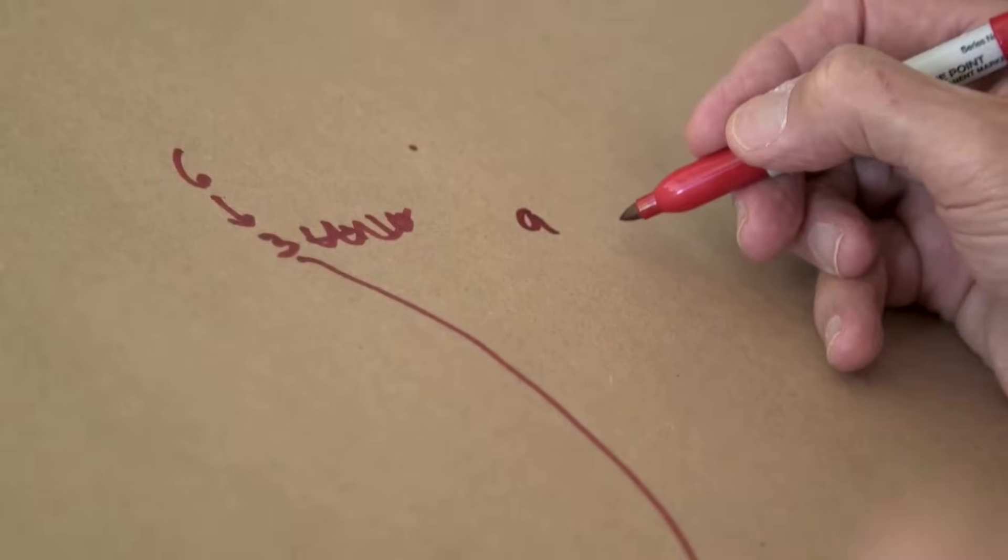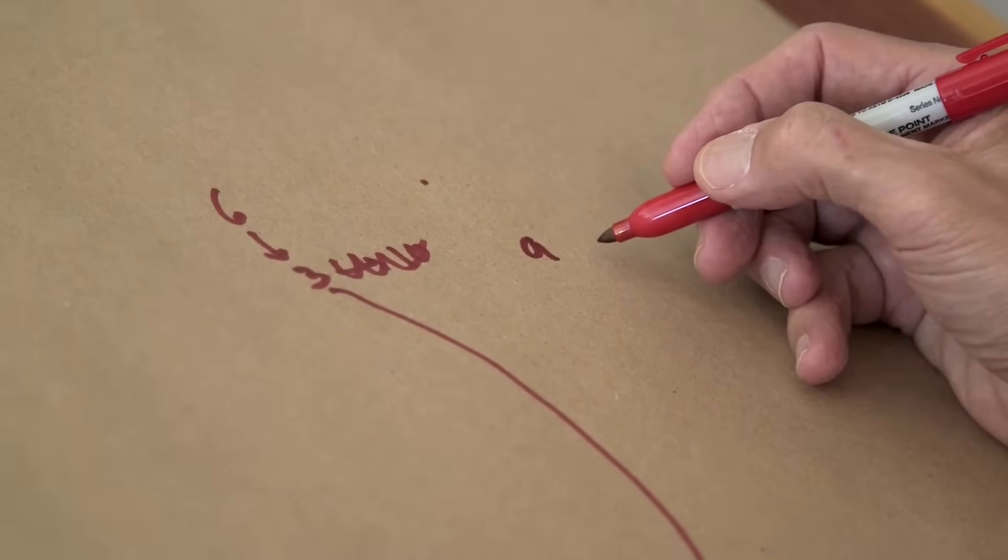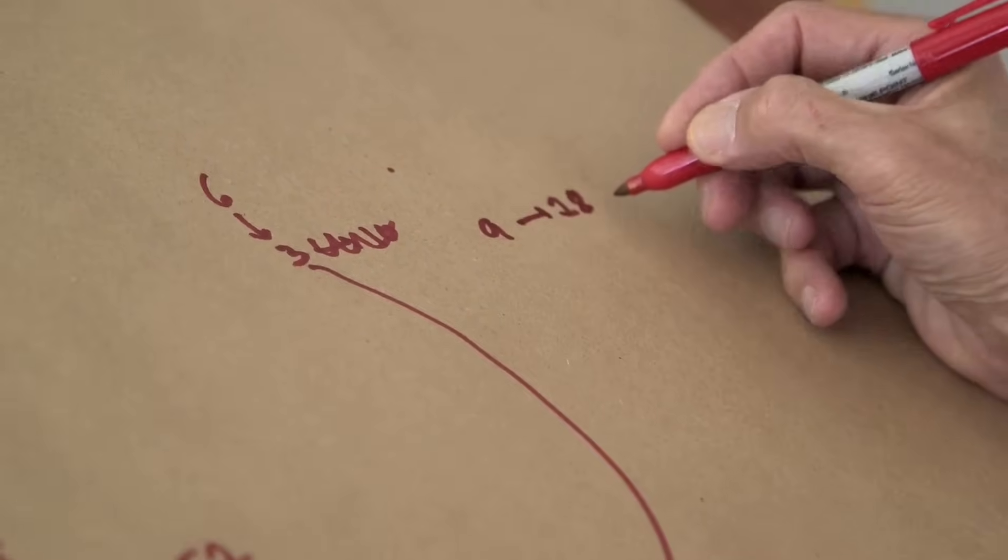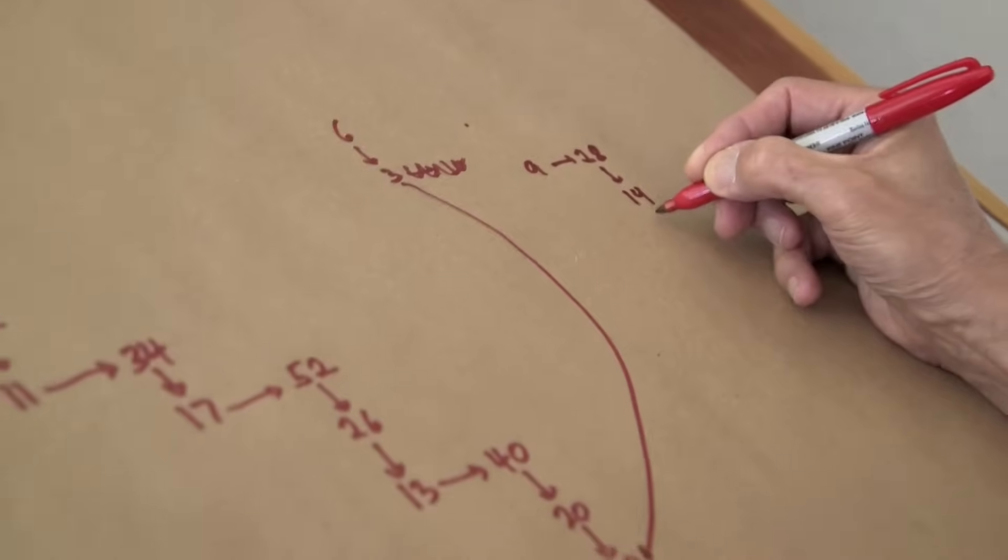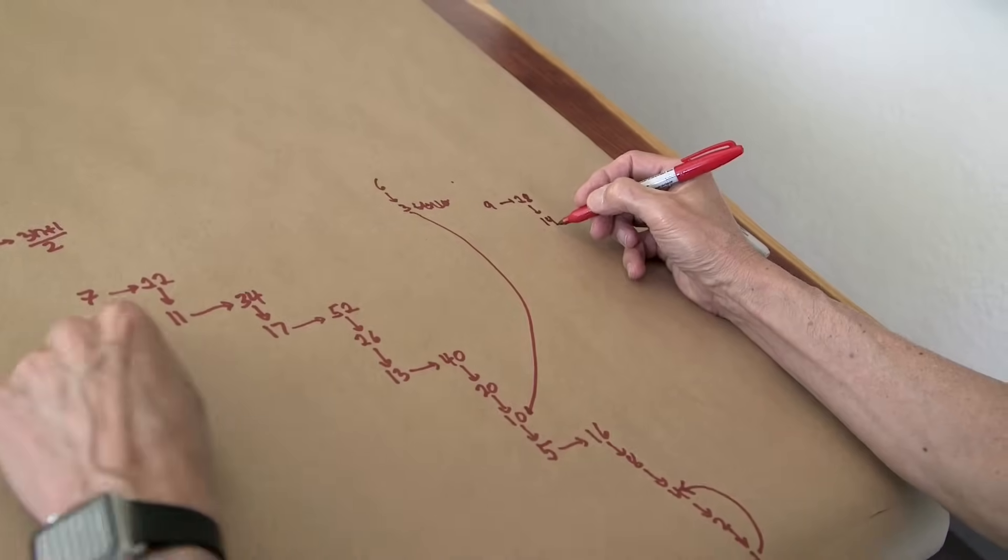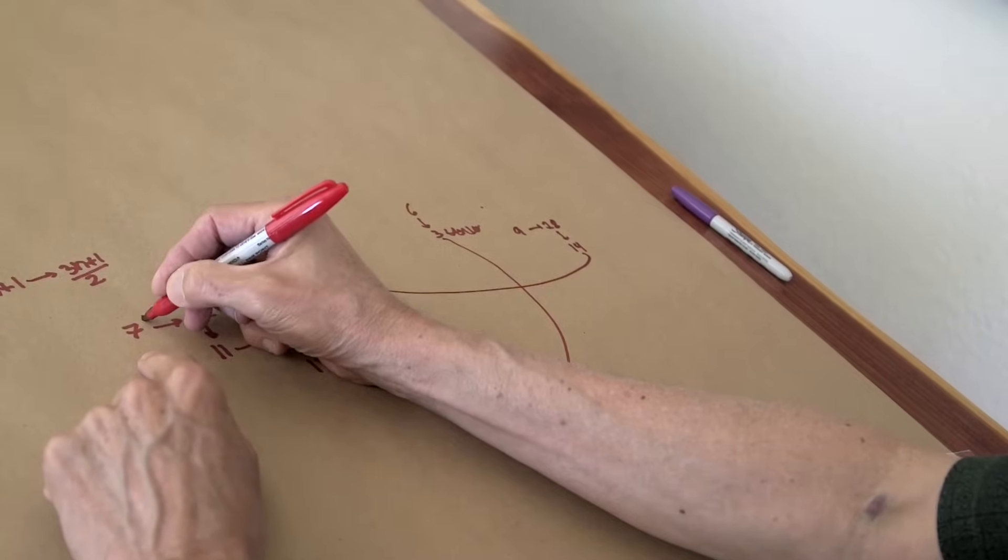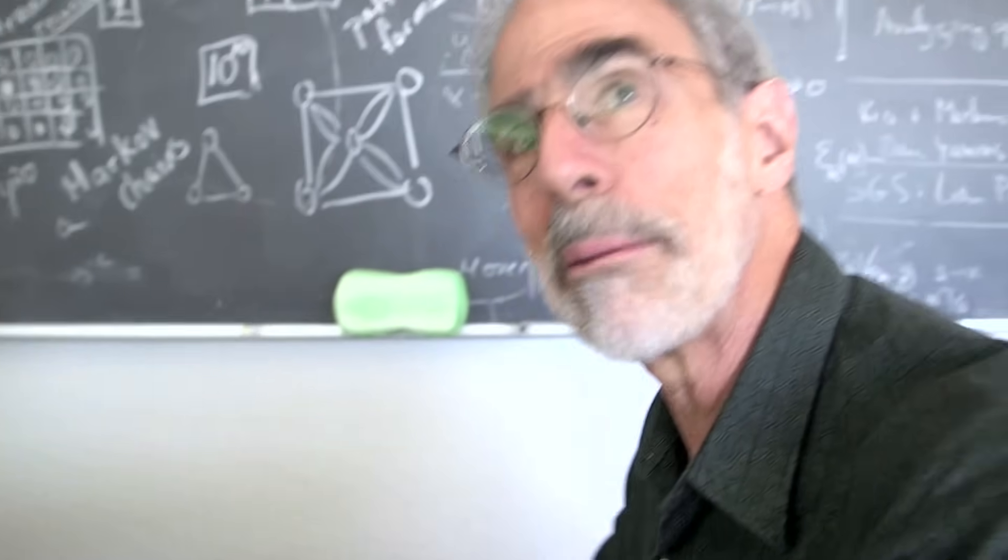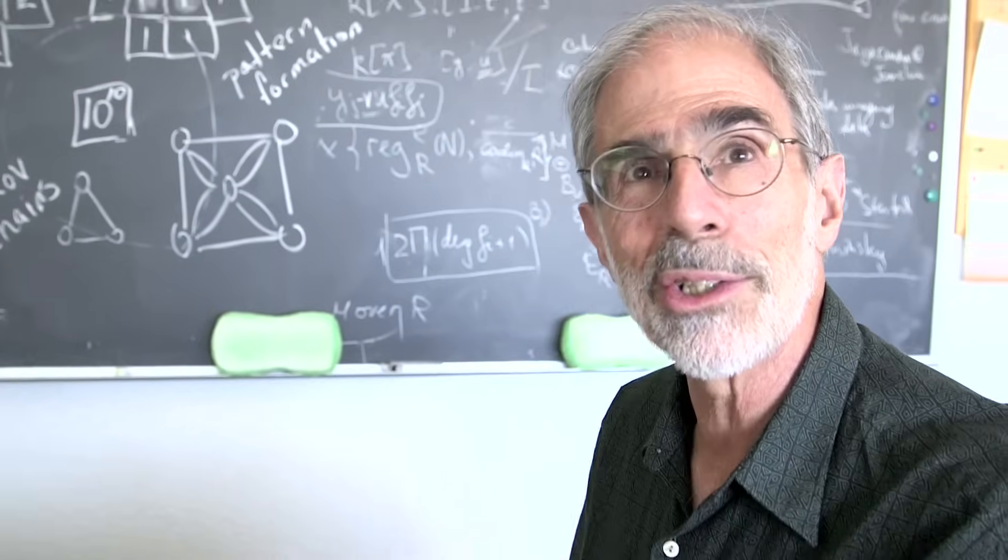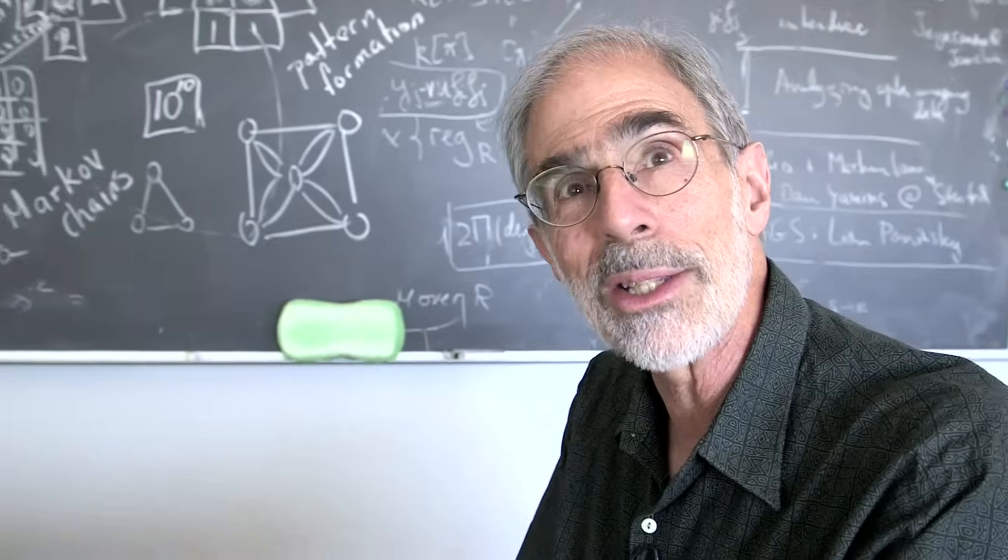So 9, okay, odd number. 3 times 9 plus 1, 28. 28, 14, whoops, 7. Where is my 7? There it is, goes to 7. So I can begin doing this and build up my tree. I don't have to go all the way each time. I know what's going to happen after I get to 7.